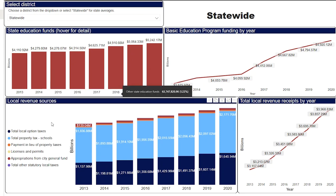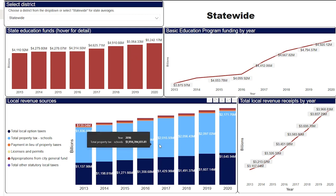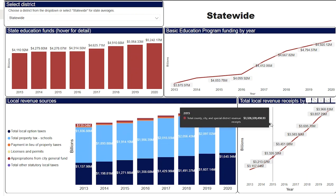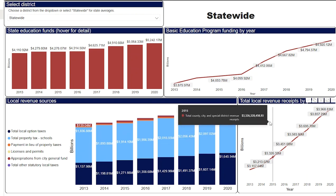The box at the bottom left of the tab contains a bar chart in which each district's local revenue is broken down by source and by year. Local funding sources include total local option taxes, property taxes, city general fund appropriations, and more. The box at the bottom right displays a line graph plotting the total local revenue received by the district each year.